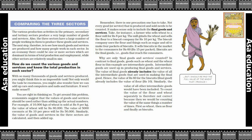How do we count the various goods and services and know the total production in each sector? So many thousands of goods and services are produced — you might think this is an impossible task. You might also wonder how we can add up cars and computers and nails and furniture — it won't make sense.